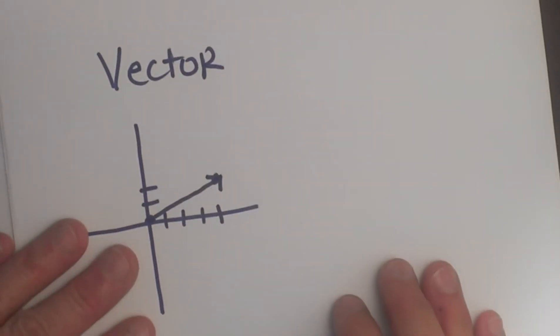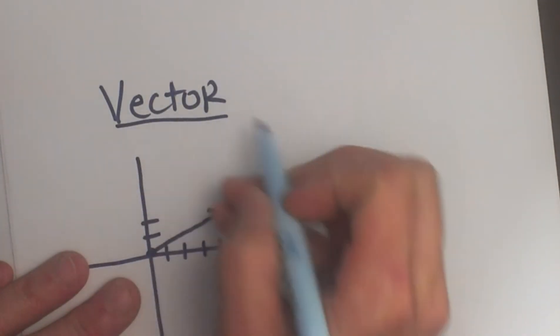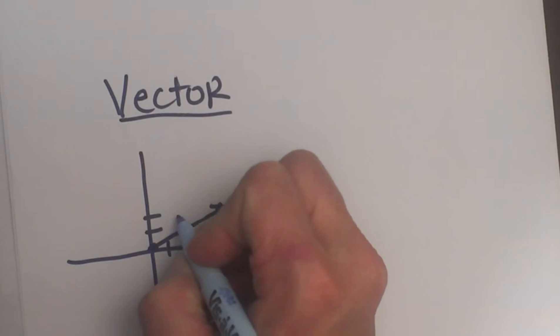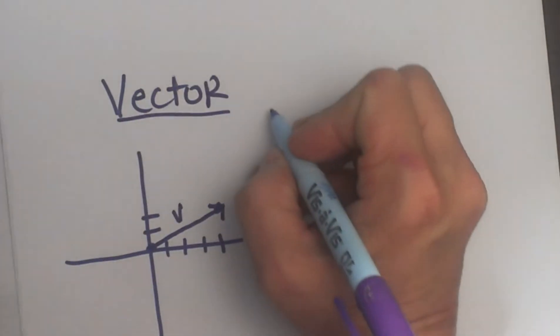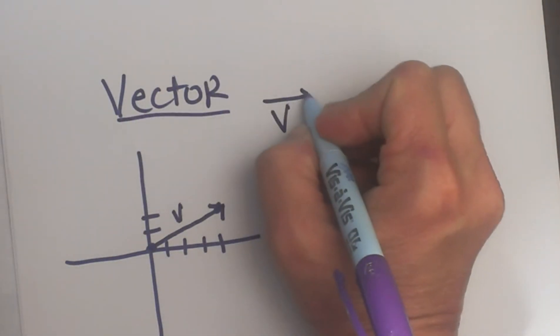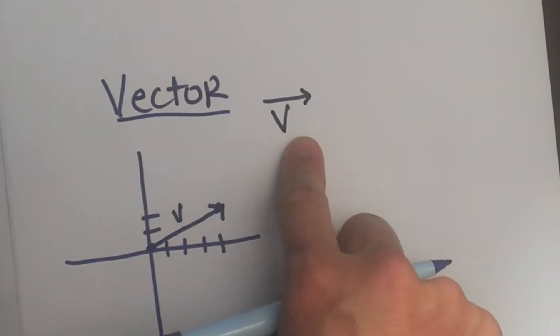Now let's look at it in terms of a vector. We're going to take a ray and place it on a Cartesian coordinate plane. A vector is typically named with a letter. Let's call this vector V. We write it as V with a little arrow over it to show that it's a vector. That's how you symbolize it.